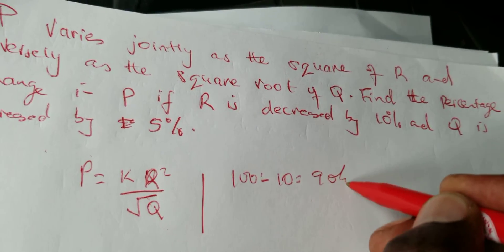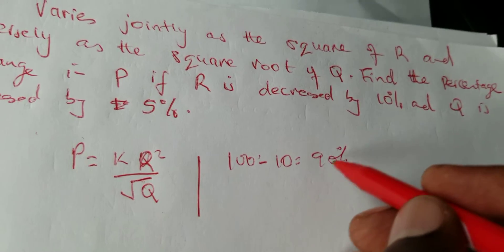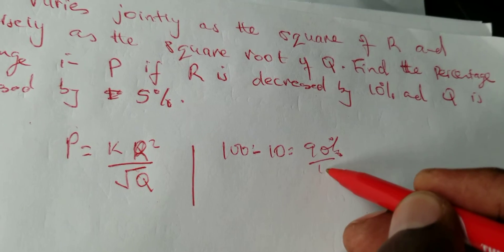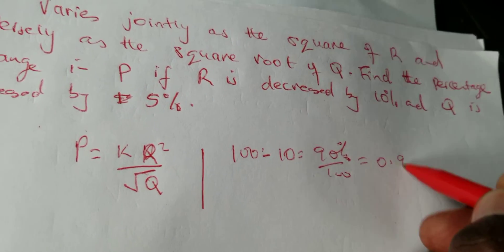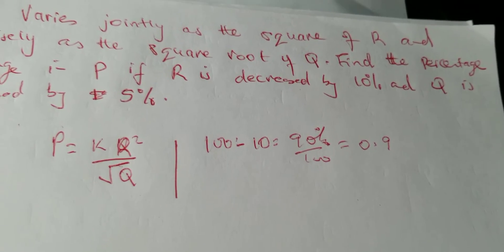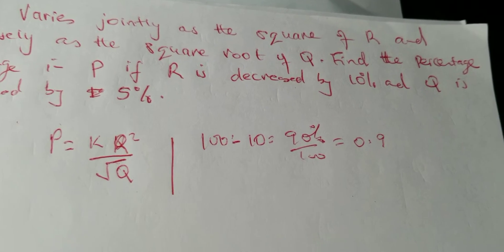So 90 percent means 90 over 100, so it's 0.9. So our new R after the change is 0.9 of the first R.